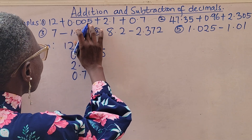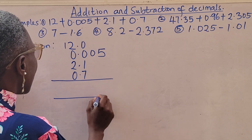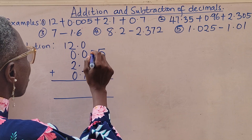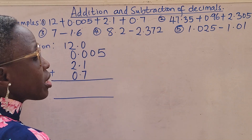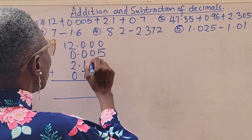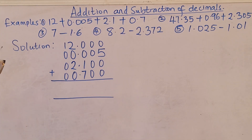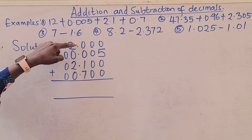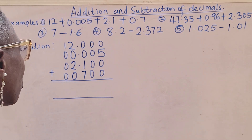I move on to 0.7. I now have 12 + 0.005 + 2.1 + 0.7. I advise parents and children to fill up empty spaces with zeros, because zero in mathematics still means nothing — whether you add it or not, it means the same thing. The most important thing is that your decimal points are aligned.